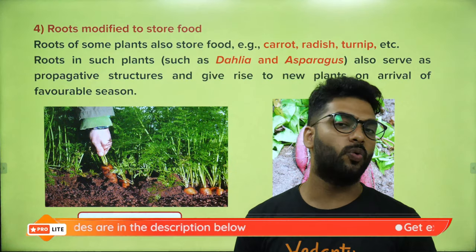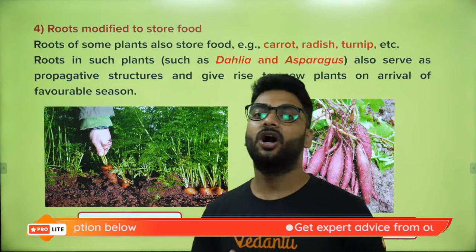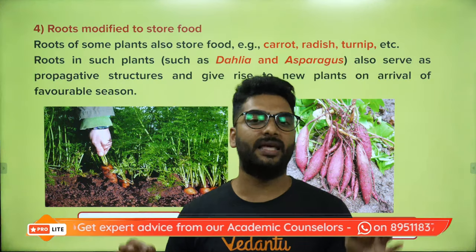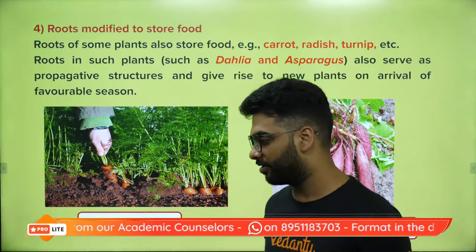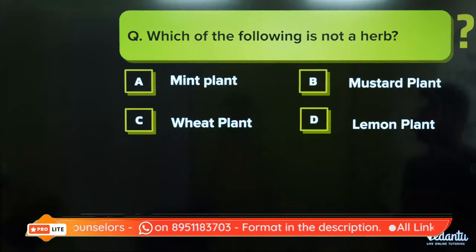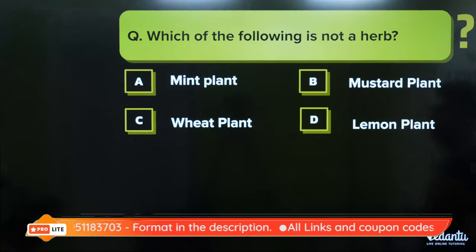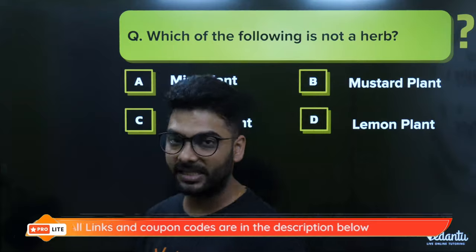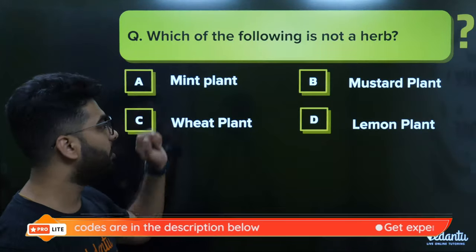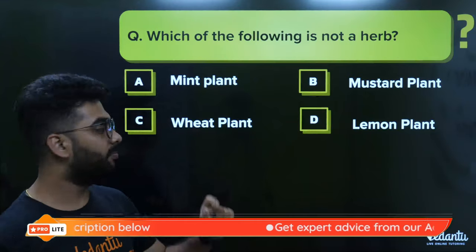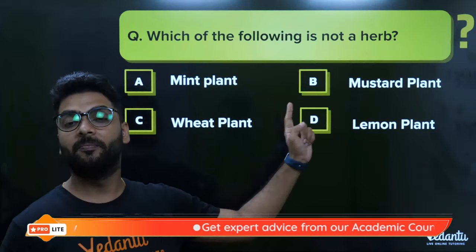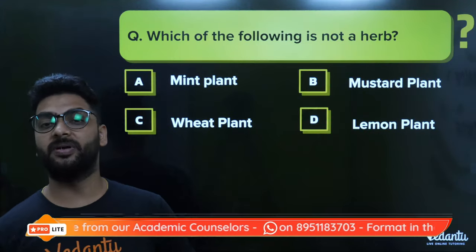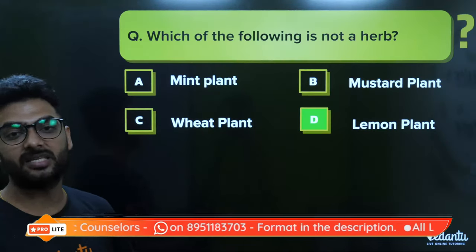Let's see how many of you can answer these questions correctly. The first question: which of the following is not a herb? We know that a herb has a green tender stem. Mint qualifies as a herb, mustard qualifies as a herb, wheat qualifies as a herb — but a lemon plant has a thin but woody, strong stem. So the lemon plant is a shrub, and that is why lemon plant is not a herb.